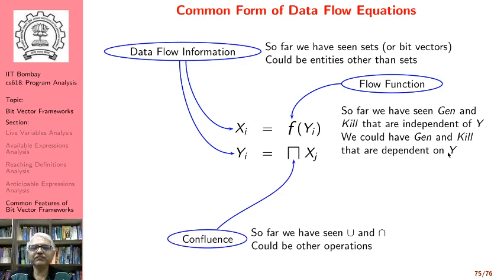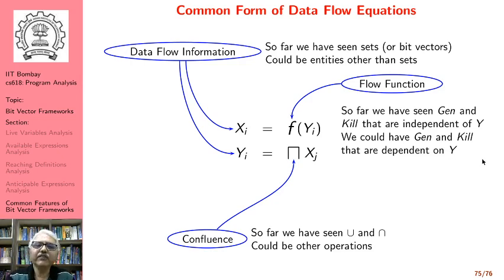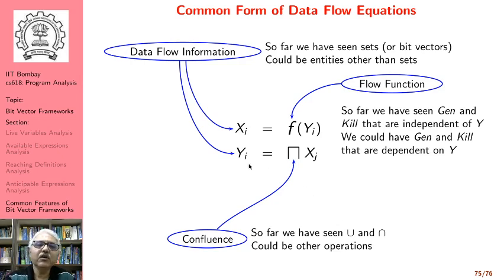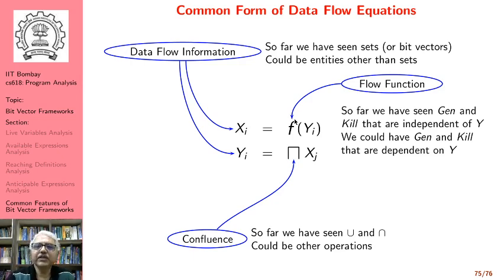The confluence operation combines the values of different data flow variables from neighboring nodes — predecessors in forward analyses, successors in backward analyses. So far we have seen set union and set intersection, but for intervals, maps, or graphs we will have other operations. We will talk about general properties of these operations, the values represented by data flow variables, and the general properties of flow functions in the second module of the course, which generalizes these concepts and talks about theoretical abstractions in data flow analysis.